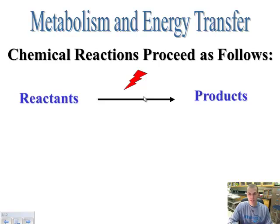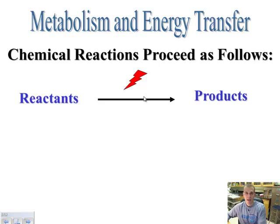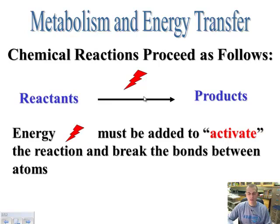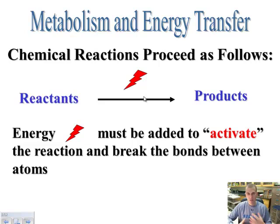Then eventually what you end up with is your products. So initially you have all your stuff to bake your cake with, and at the end you have your product, which is your cake. But you needed something for that reaction — for the cake to bake, put it in the oven or whatever to get everything moving. So you have your reactants and products, and then something activating the chemical reactions to occur. The energy must be added to activate this reaction, and the whole reason for that energy is to help break the bonds between the atoms.